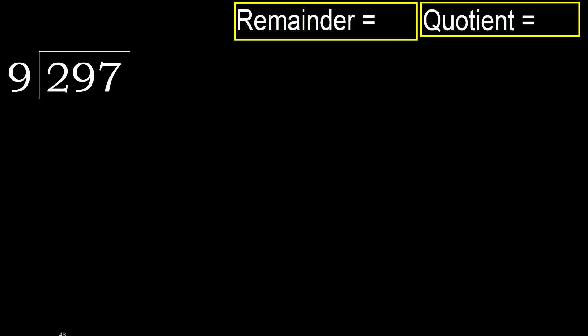297 divided by 9. 2 is less, therefore next. 29 is not less, therefore we work with 29.